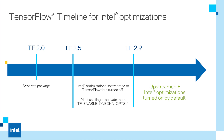Intel optimizations for TensorFlow have been upstream to TensorFlow since version 2.5. Developers can benefit from Intel performance optimizations in TensorFlow by enabling an environment variable without any code change. In TensorFlow release 2.9 and later, Intel optimizations are upstream and enabled by default.